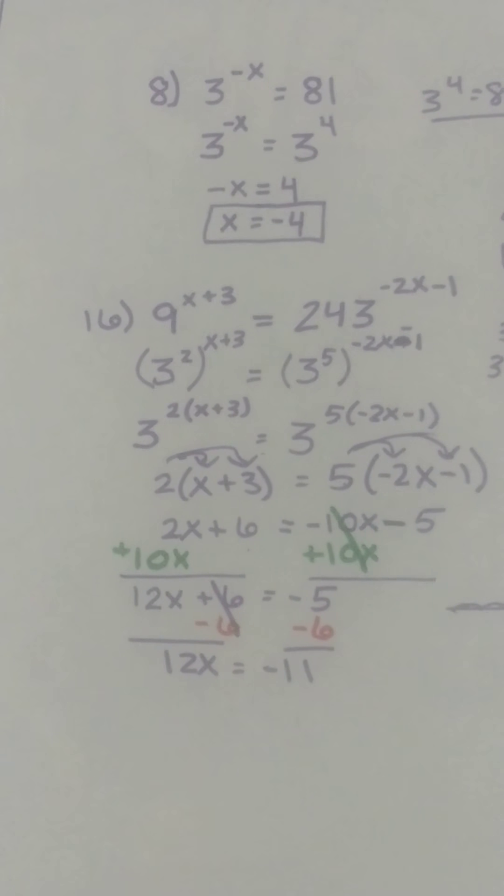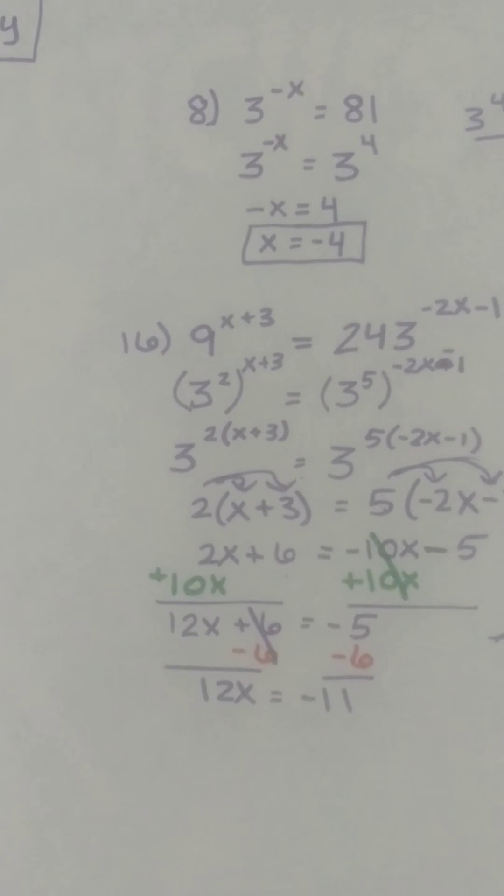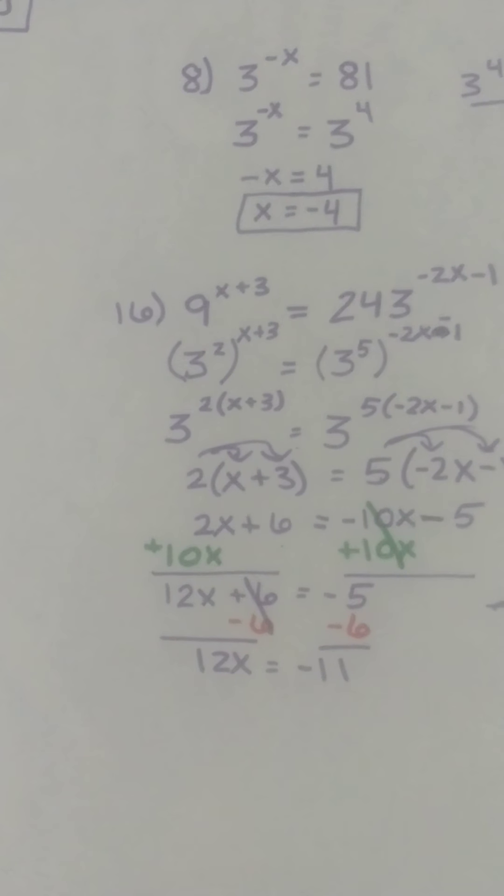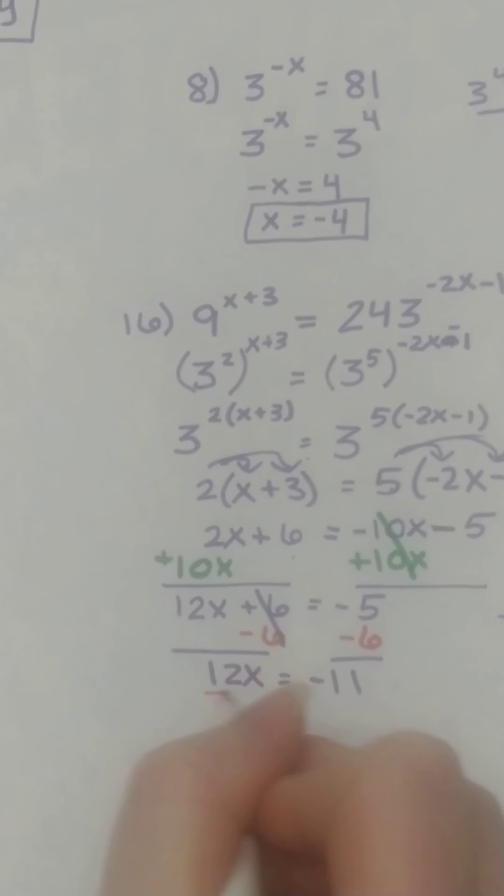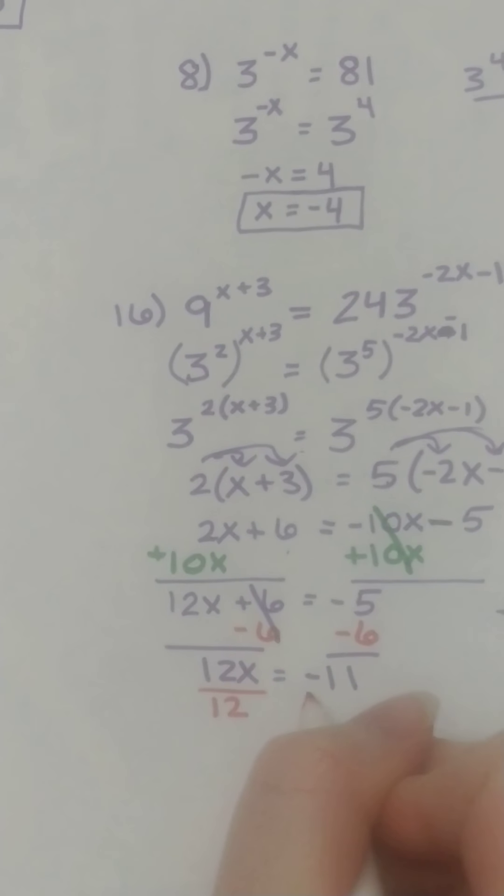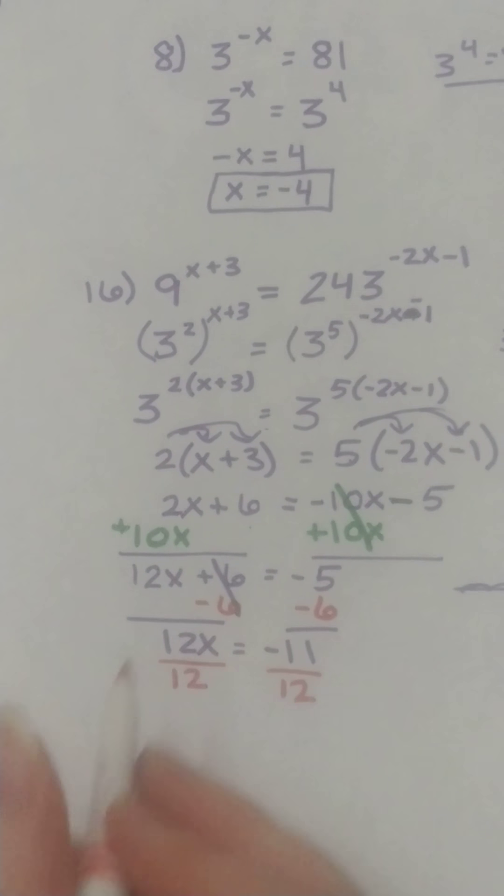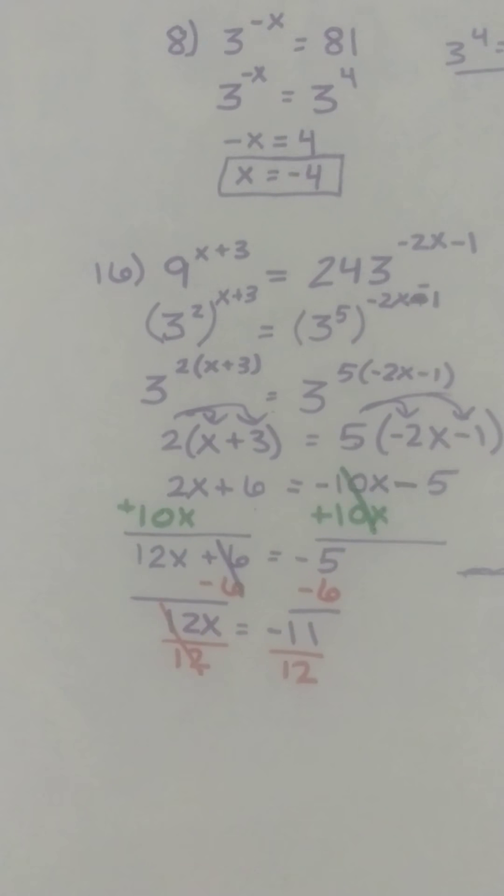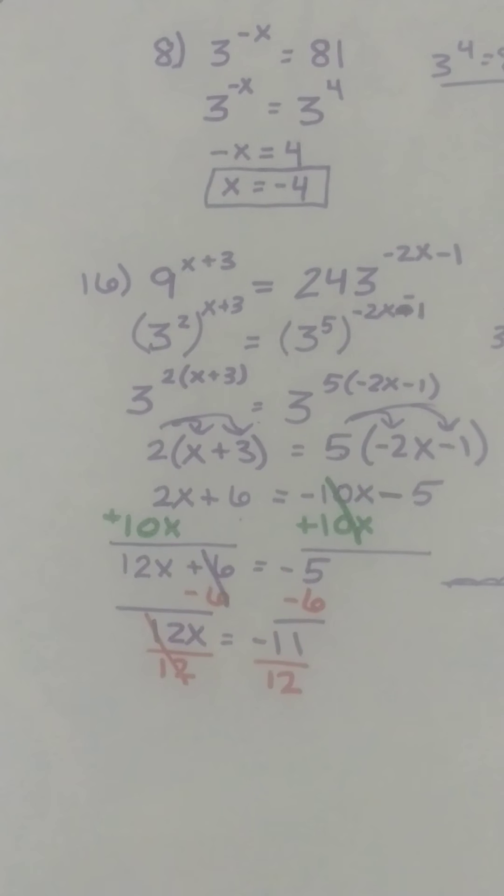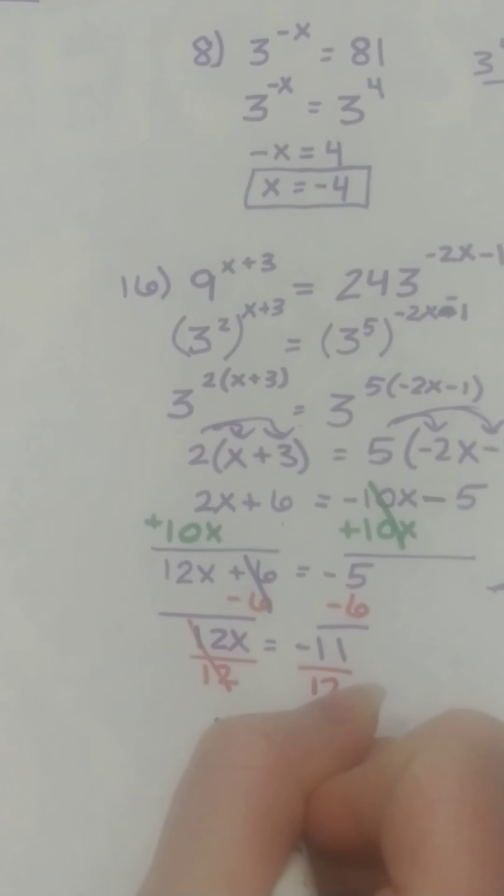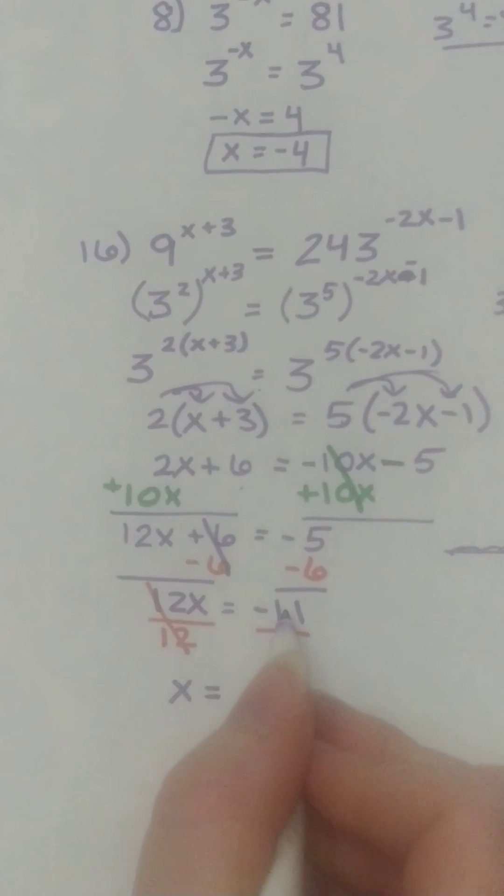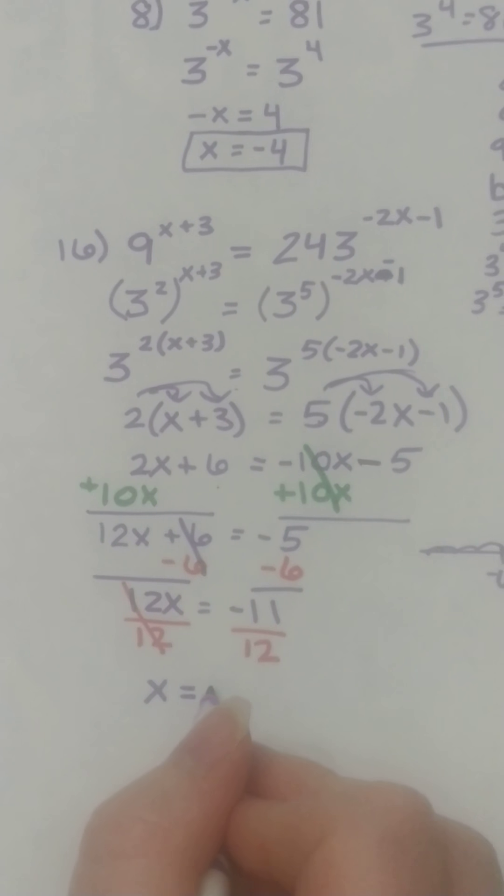12x equals negative 11. And what's the last step? Almost always divide. Yes. So 12 divided by 12 cancels. You're left with x equals and then we've got negative 11 over 12.